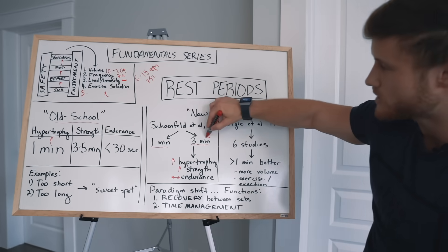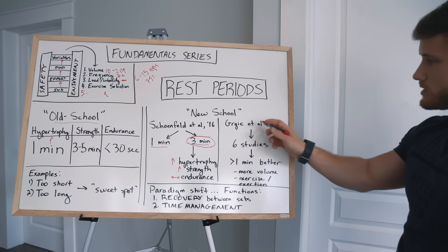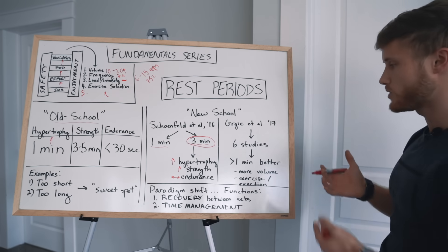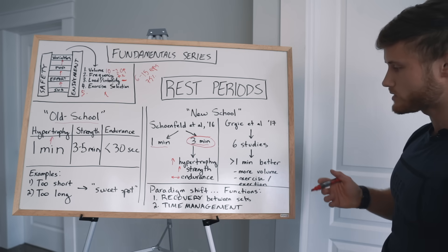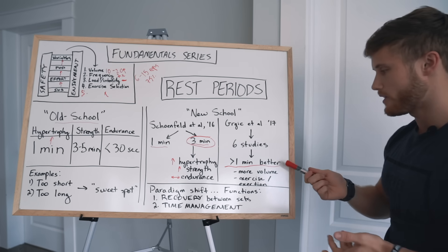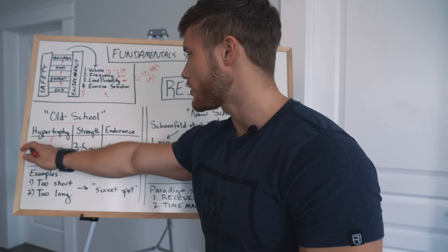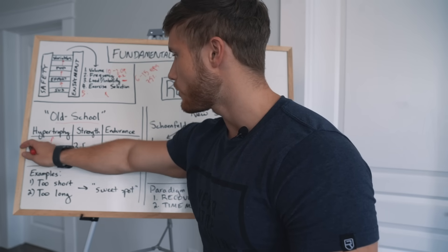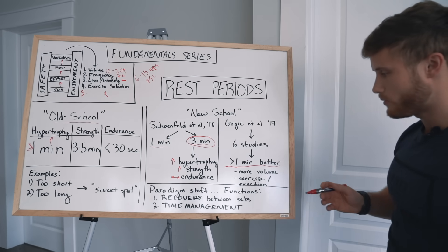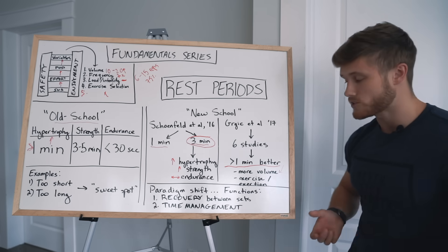So this was really a major win for the longer rest period group. And then the next year in 2017, Grigic and colleagues did a meta analysis where they took six studies investigating this, pooled the results together, and essentially found that resting for more than one minute between sets was better than resting for less than one minute between sets. So you should at least rest for more than one minute rather than rushing through your workout and resting for less than that. And their main rationale for that was that it allowed the subjects to perform more total volume.